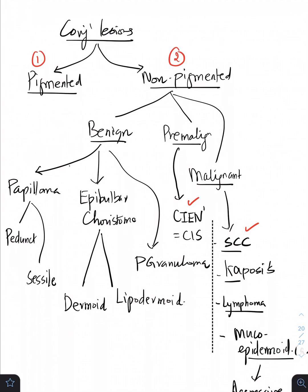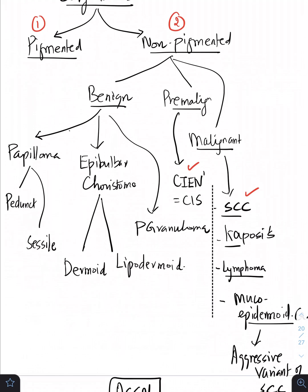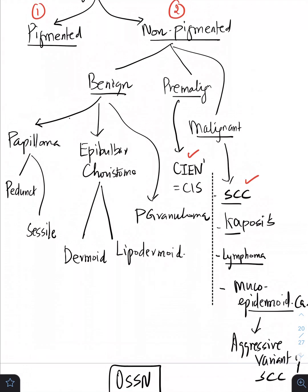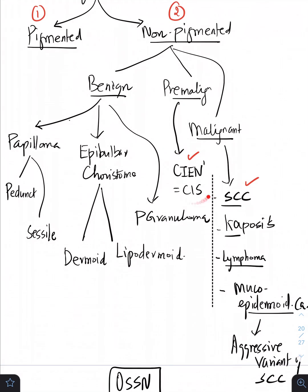Carcinoma in situ also called as conjunctival or corneal intraepithelial neoplasia. The malignant ones are going to be the squamous cell carcinoma, Kaposi sarcoma, lymphoma, and an aggressive variant of squamous cell carcinoma that is going to be the mucoepidermoid carcinoma.